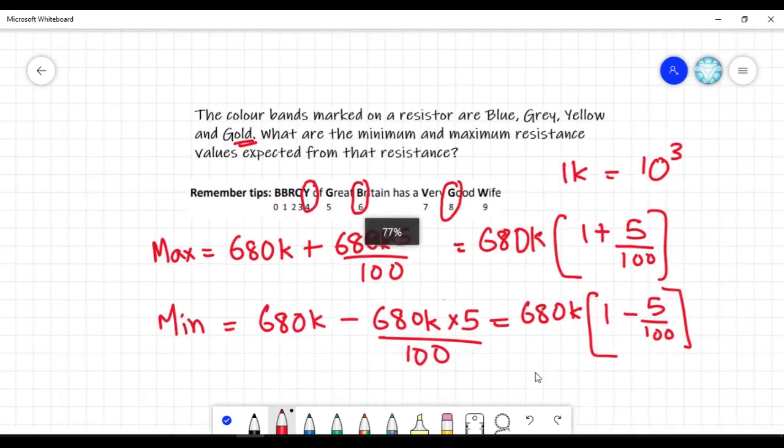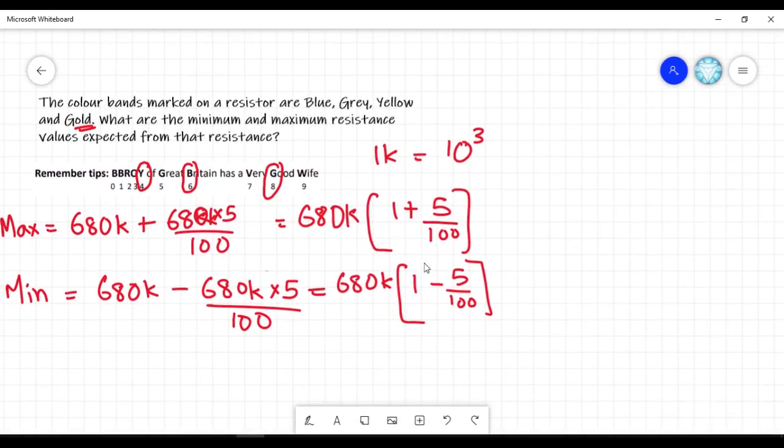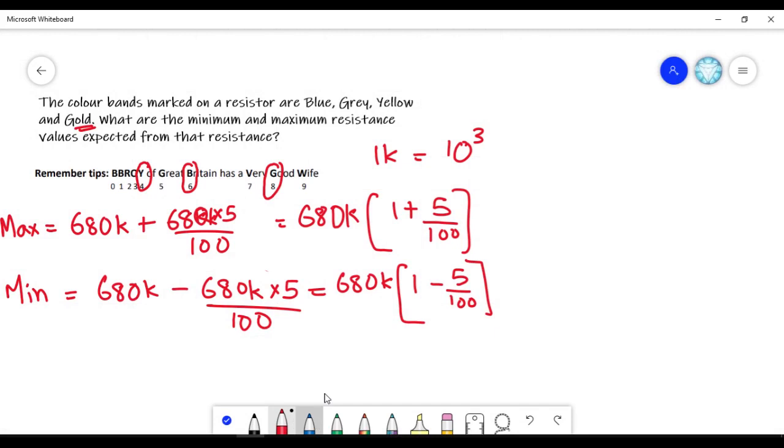Now, I will rewrite it. 680k into 1 plus 5 by 100 for maximum. For minimum, 680k into 95 percentage, 95 by 100.